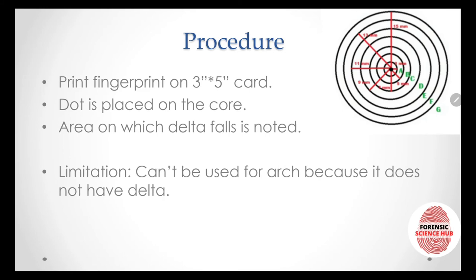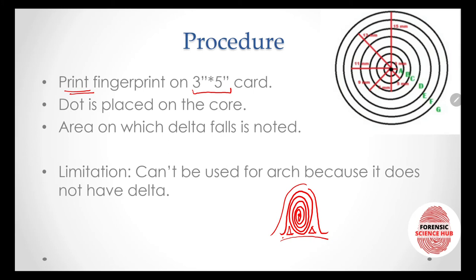Now let's look at the procedure. The prints to be classified are printed on a card with dimensions of three inches by five inches. Then the dot — the center of the reticule — is placed on the core of the fingerprint. The core area of the fingerprint is aligned to the center.